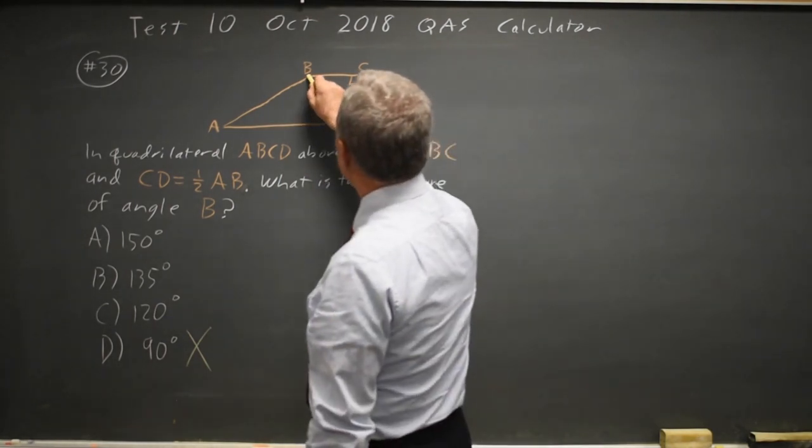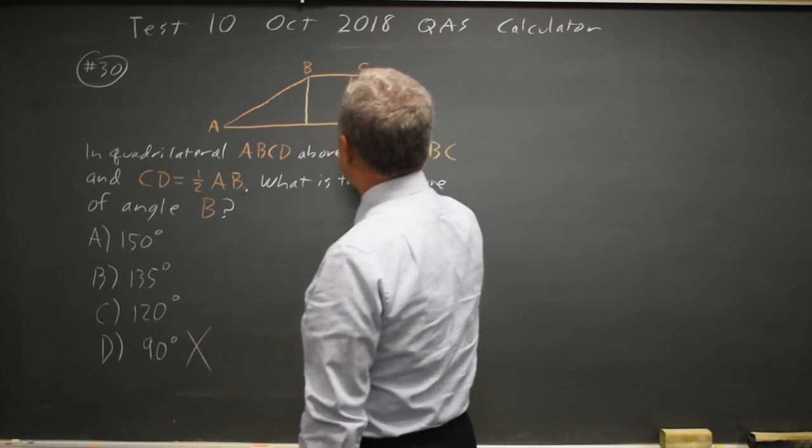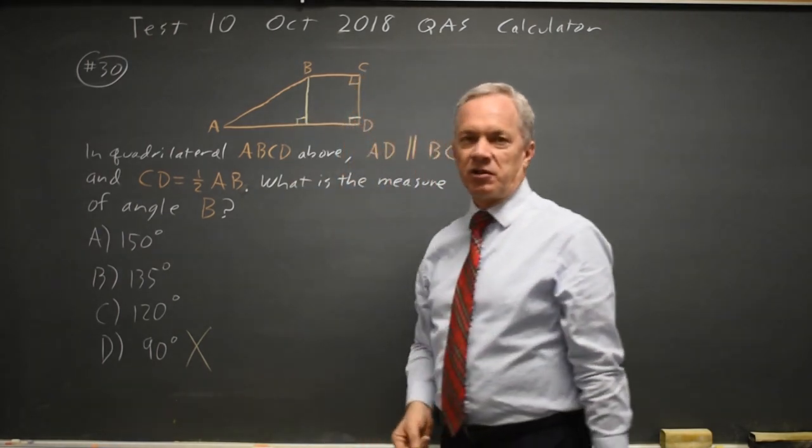I'm going to draw a parallel line through B parallel to CD. Since this is a right angle and BCAD are parallel, this is a right angle, so this is also a right angle. I have a right triangle there.